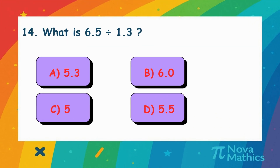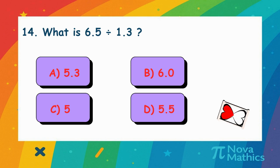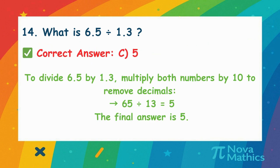13. What is 6.5 divided by 1.3? We want to divide 6.5 by 1.3. Multiply both by 10 to make them whole numbers. 65 divided by 13 equals 5.